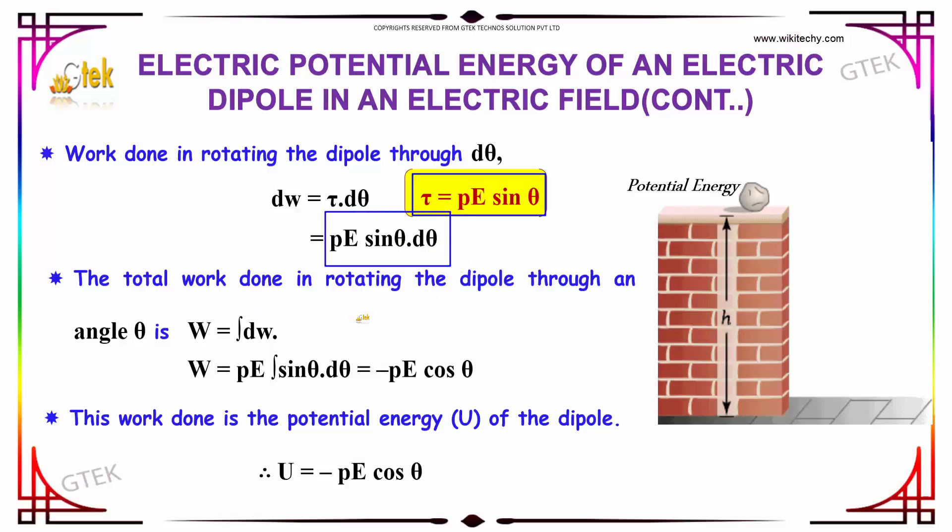The total work done in rotating the dipole through an angle θ is W = ∫dW. Substituting and taking constants outside: W = pE ∫sin θ dθ. On integration, this gives W = -pE cos θ.